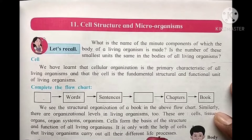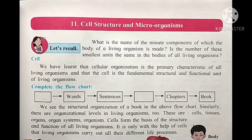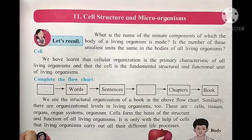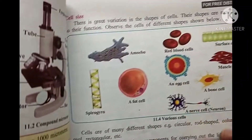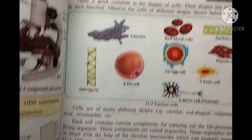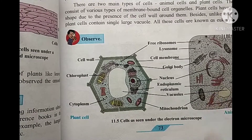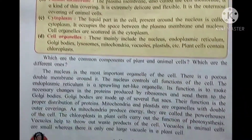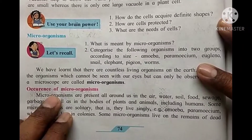Hello students, in Standard 7 Science, Chapter 11 on cell structure and microorganisms, we have learned in a previous video about the microscope, the cell structure, and the various cells and their two types: plant cell and the animal cell. There are also the organelles of the cells. After that, we will learn about the microorganism and the occurrence of the microorganisms.